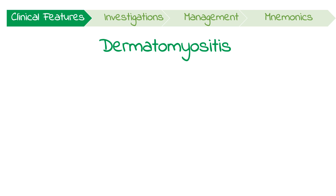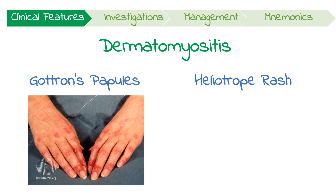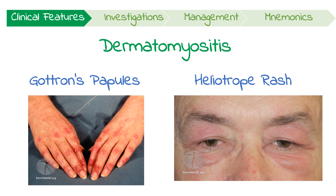On top of these features, people with dermatomyositis have dermatological stigmata too. The two main features to remember are Gottron's papules and a heliotrope rash. Gottron's papules are small purple raised lesions on the tops of the small joints of the hands, while a heliotrope rash is a purple bilateral discolouration of the upper eyelids with swelling of the surrounding skin.